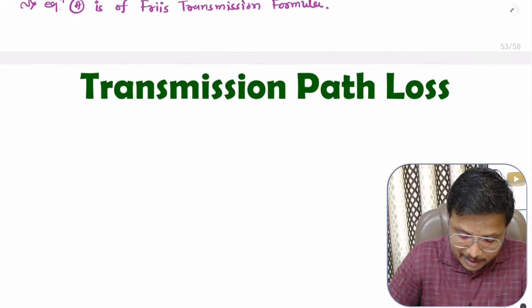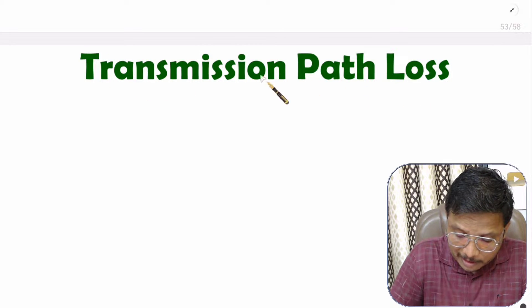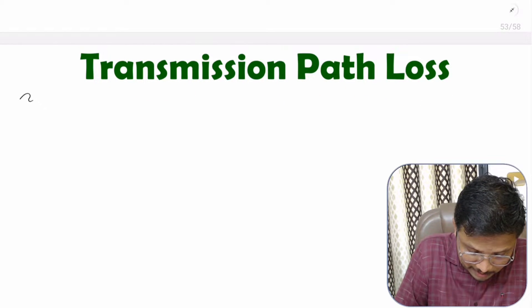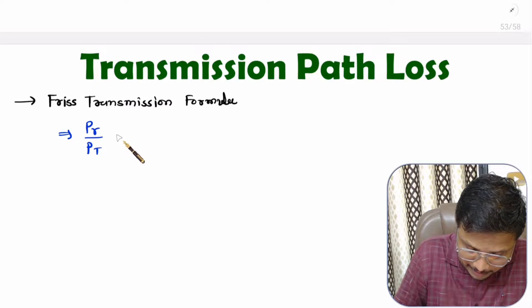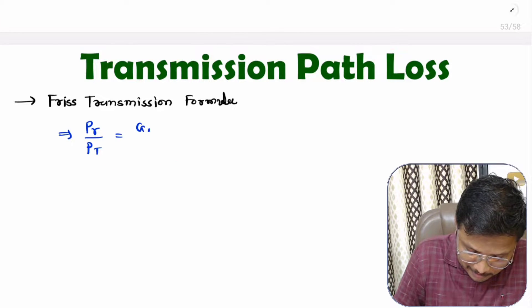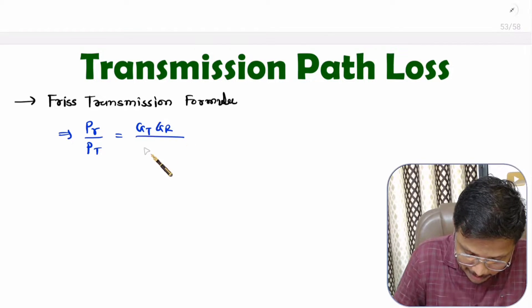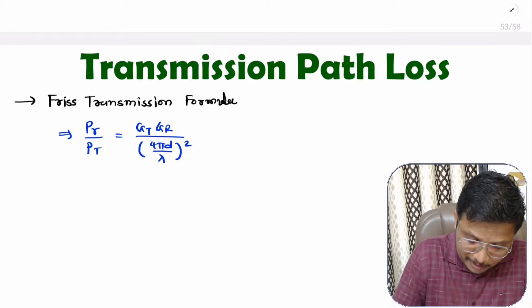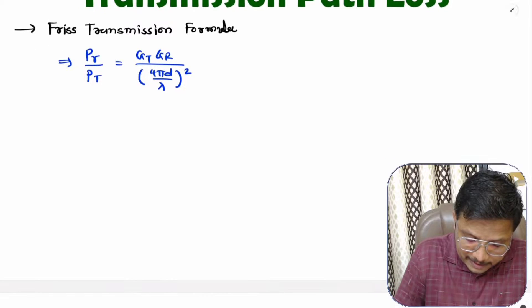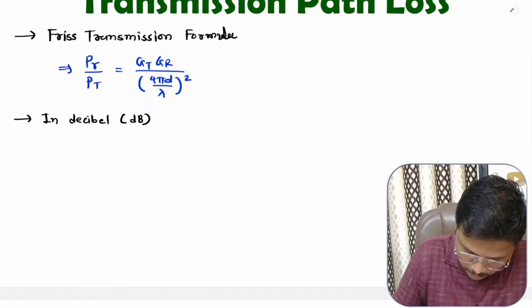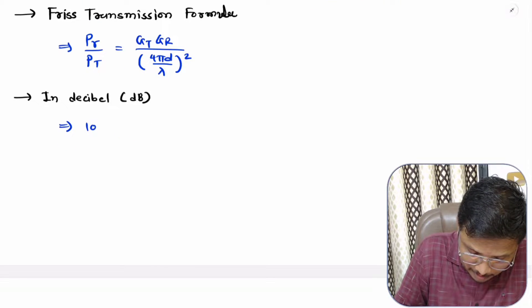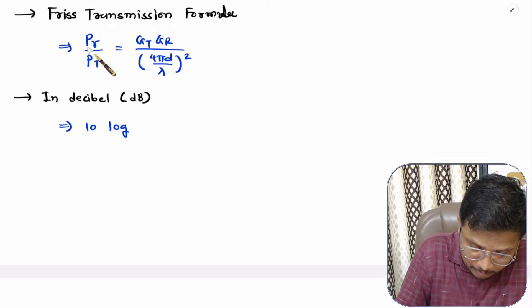Using this equation, we will be calculating transmission path loss. Let me note down the Friis transmission formula first. The Friis transmission formula is the ratio of received power divided by transmitted power: GT times GR divided by (4πD/λ) whole square. Now to get transmission path loss, we will be considering this equation in the form of dB, so we will be taking 10 log on both sides.